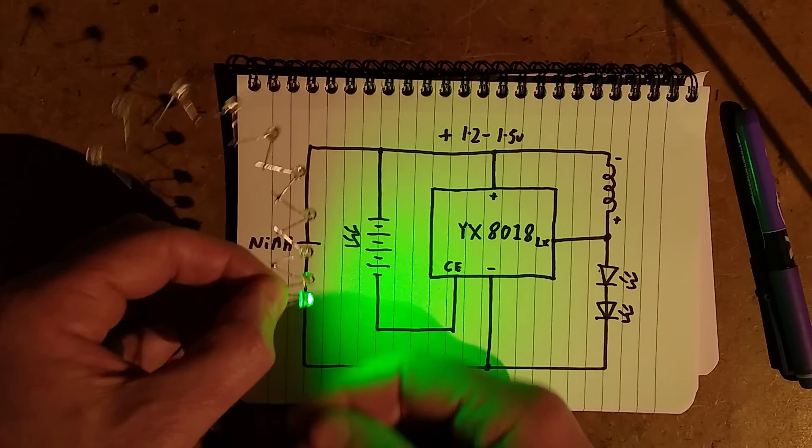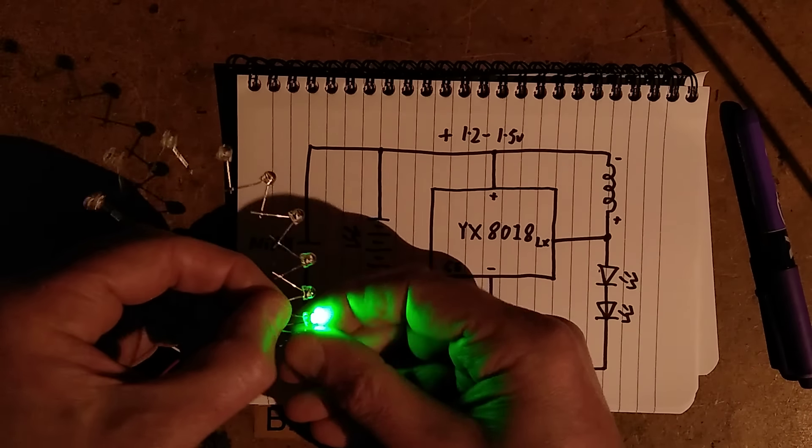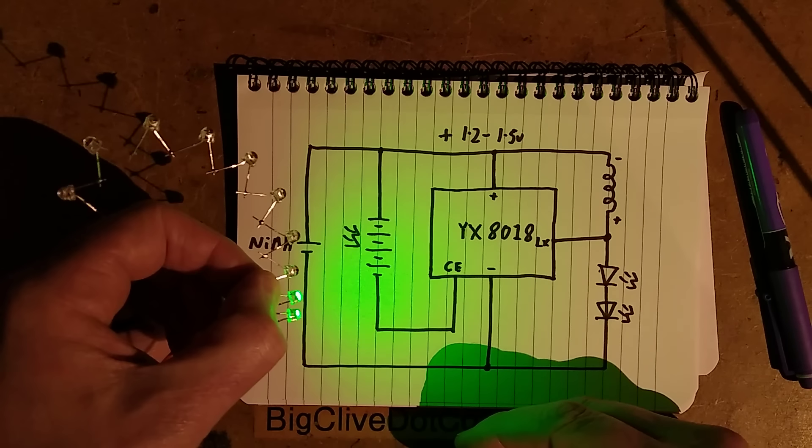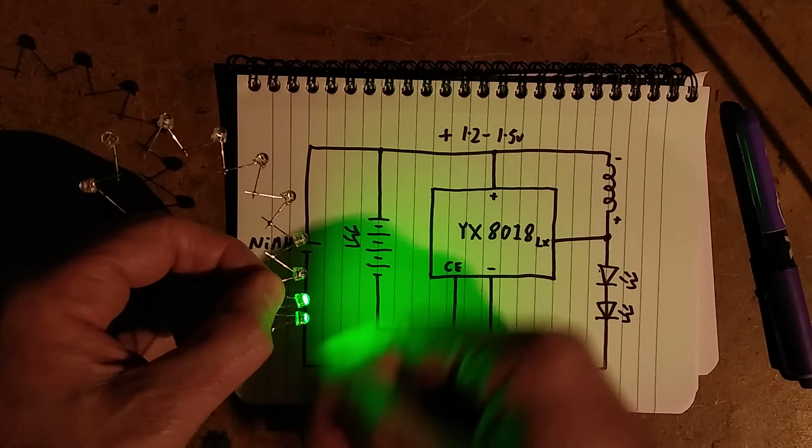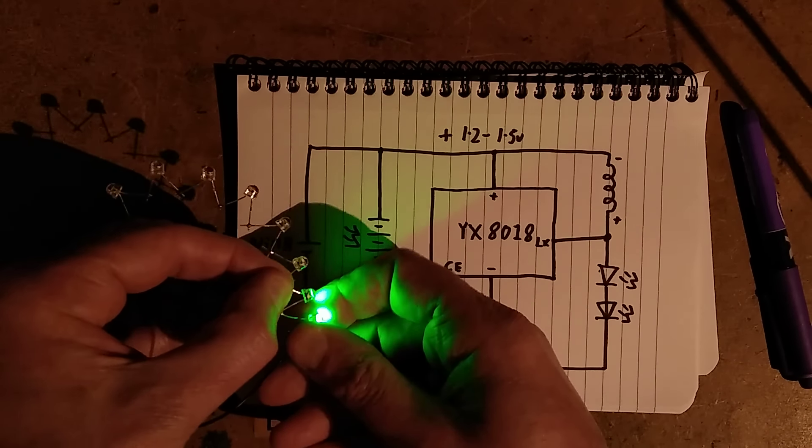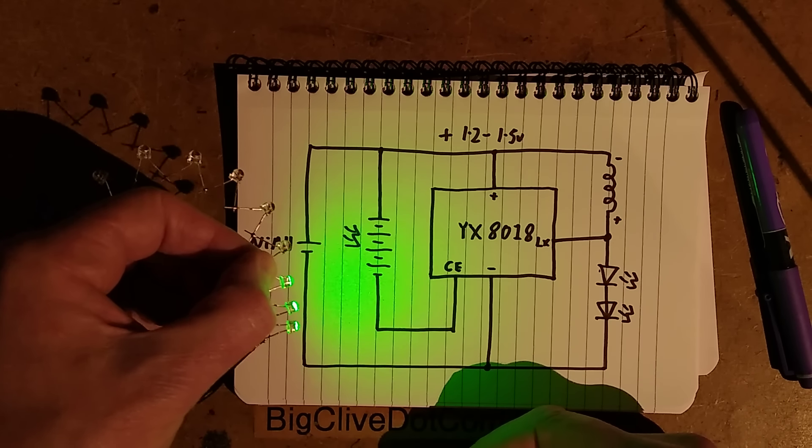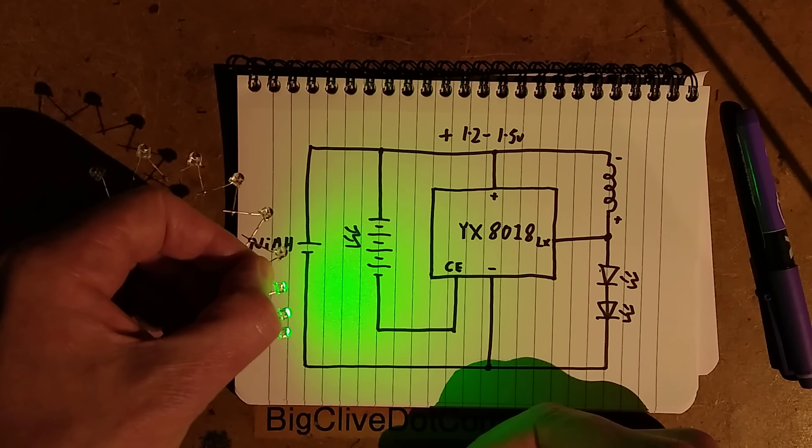Now we switch to two, and you'll see that it's still putting out decent light, but it's nowhere near as much. It is running them at lower current. When I go to three, it's still putting out a modest amount of light, but it has dropped.